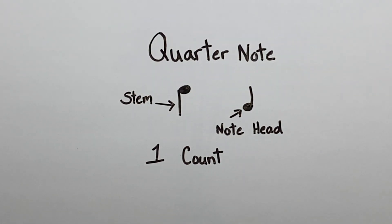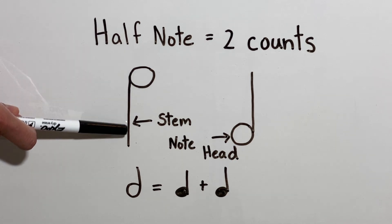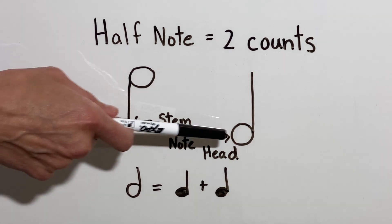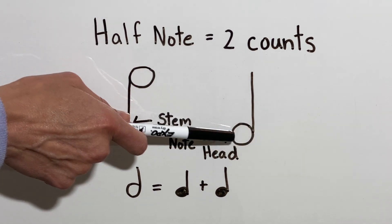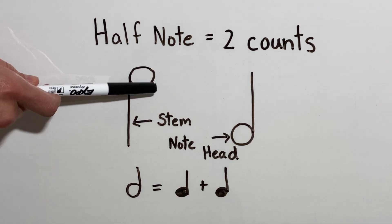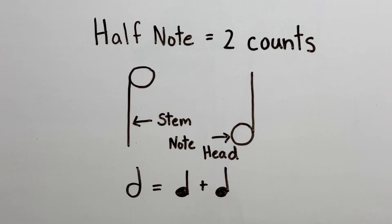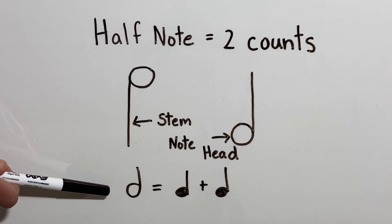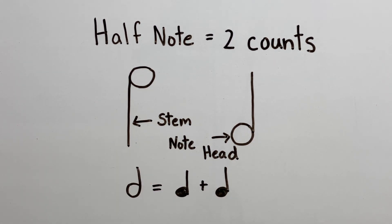A quarter note gets one count. The next note we're going to talk about is a half note. A half note looks an awful lot like a quarter note — there's just one thing that's different. Our half note still has our stem. If the stem goes down, it goes in front of the note head. And if the stem goes up, it goes behind the note head. It still has the note head, but this time the note head is not colored in — it's just open. So when it's open like this, that makes it a half note. A half note is going to get two counts, or we could say two beats. One half note equals two quarter notes.